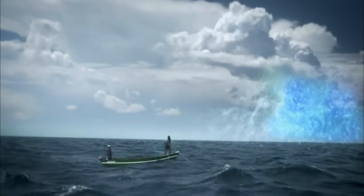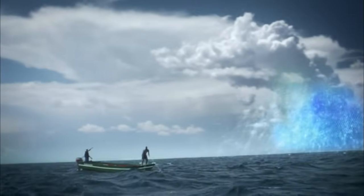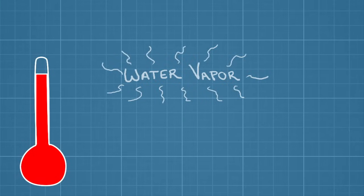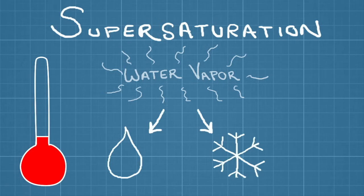As the Sun warms Earth's surface, heat is transferred into the atmosphere along with water vapor. The warmer the air, the more moisture it can hold. But warm air doesn't usually stay near the surface for long. Like a hot air balloon, it rises. As it does, it cools. The colder the air becomes, the less water vapor it's able to hold. If the air becomes cold enough, it reaches a state called supersaturation, which causes some of the water vapor to transition back to a liquid or solid state.